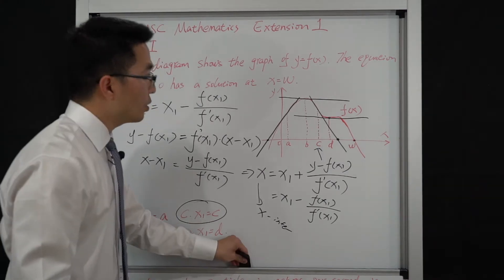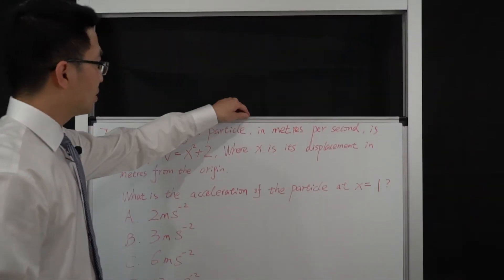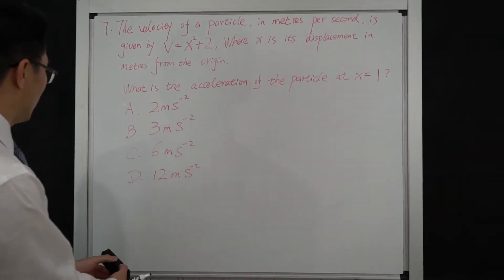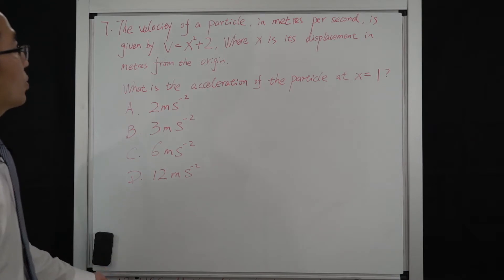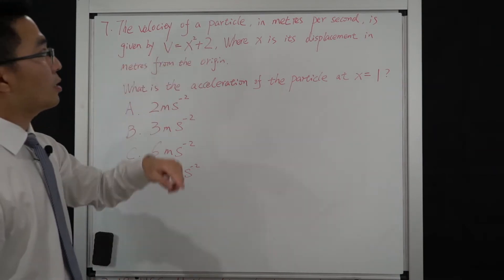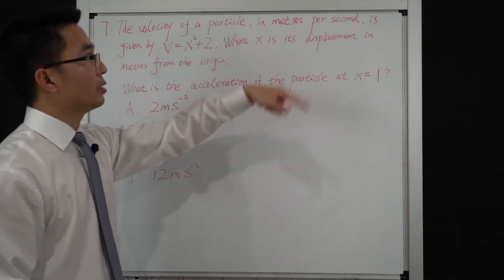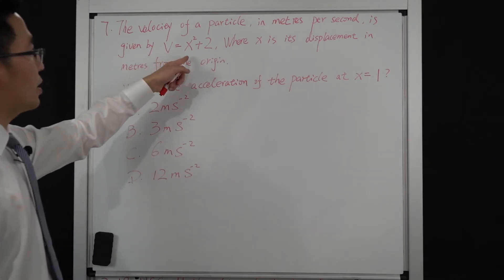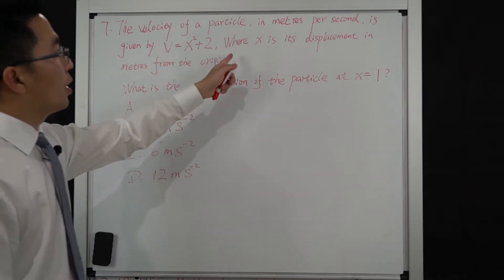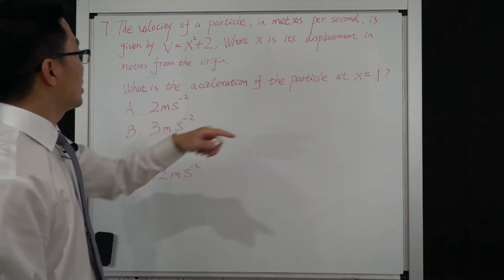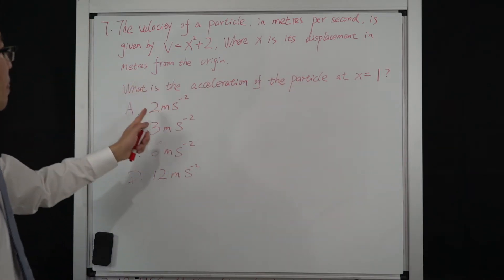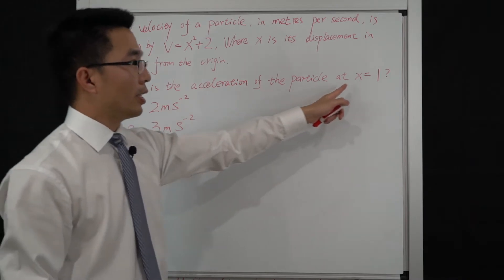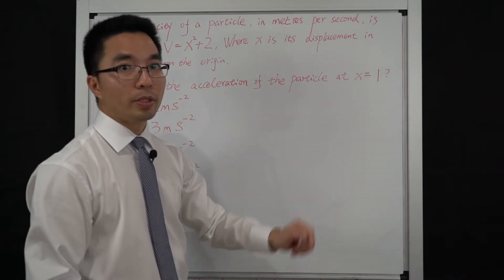Let's go to question 7. The velocity of a particle in meters per second is given by v equal to x squared plus 2, where x is displacement in meters from the origin. The question is: what is the acceleration of the particle at x equal to 1?